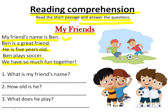Now let's understand the passage. My friend's name is Ben — can you see Ben here? He is saying that his friend's name is Ben. Ben is a very good friend and he is five years old. Ben plays soccer. They both have a lot of fun together.